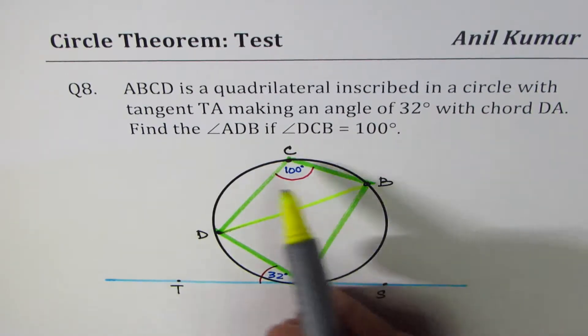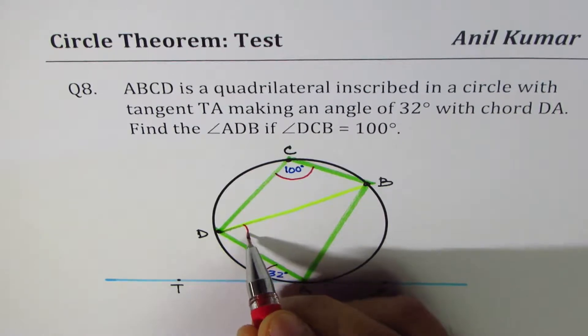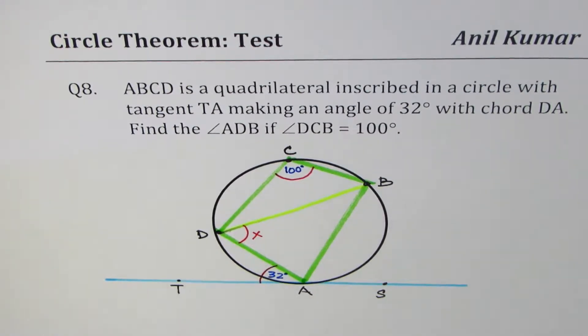A quadrilateral inscribed within the circle is given along with the tangent. You need to find the angle ADB. That's the angle which you need to find. You can pause the video, answer the question and then look into my suggestions.